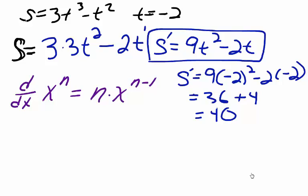Therefore, we know that the slope of the tangent line to s equals 3t cubed minus t squared, evaluated at t equals negative 2 is 40. This concludes our example, and we'll see you next time.